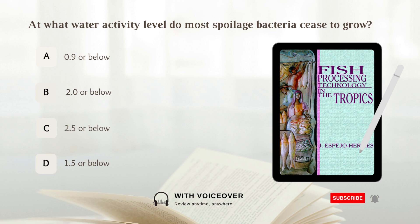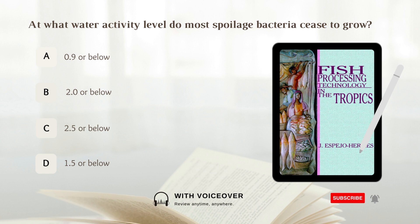At what water activity level do most spoilage bacteria cease to grow? A. 0.9 or below. Answer: A. 0.9 or below.